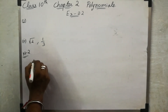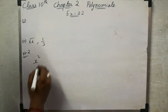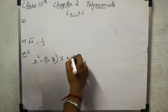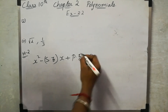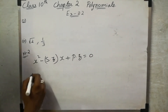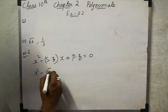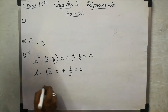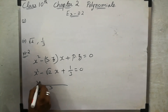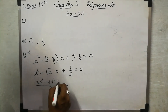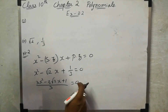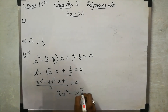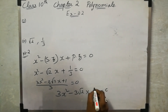Method 2: We use the formula x squared minus (sum of zeros) times x plus (product of zeros) equal to 0. Sum of zeros is root 2 and product of zeros is 1 by 3. So x squared minus root 2 x plus 1 by 3 equal to 0. Multiplying through by 3: 3x squared minus 3 root 2 x plus 1 equal to 0.